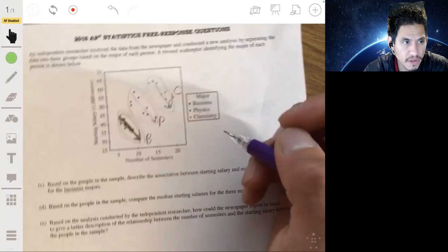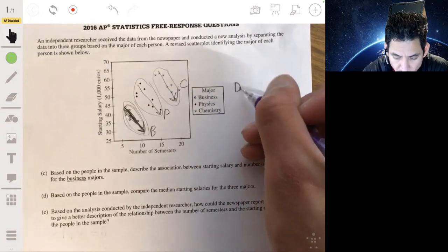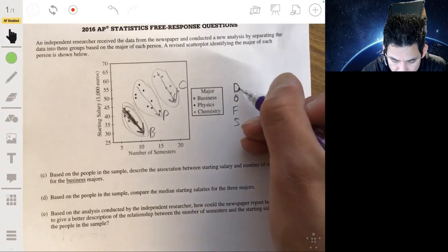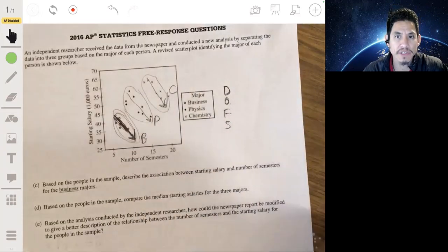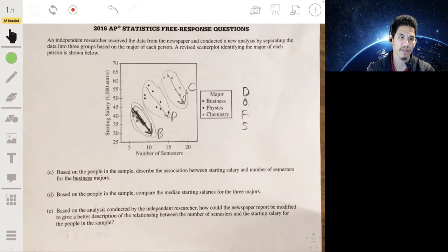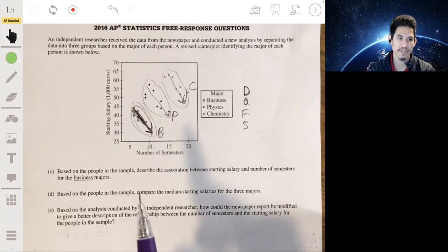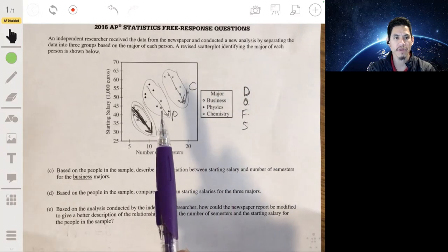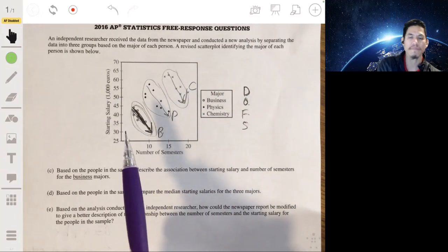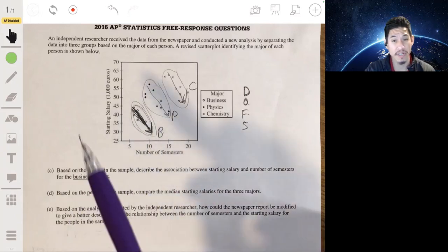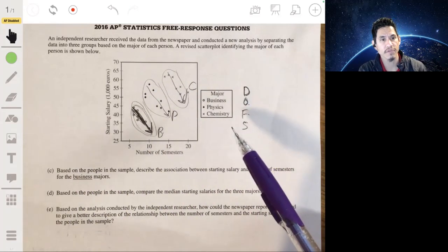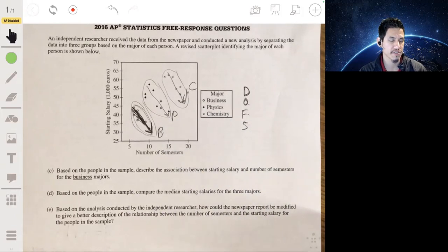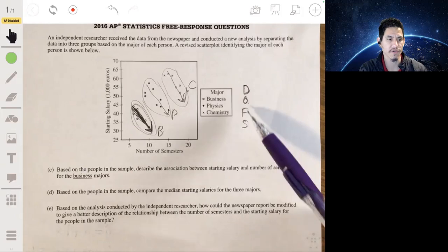So we could basically say that, let's actually remember this acronym when we're talking about scatterplots, DOFS, direction outliers form shape. So direction outliers form shape, make sure you address those four characteristics to get full credit. So address the direction, which is negative. Any outliers, nothing really. Form. We either say non-linear or it seems to be linear and the strength. So medium, strong, weak, that sort of thing. They're not too strict on that, but they want to see that you address these four things.